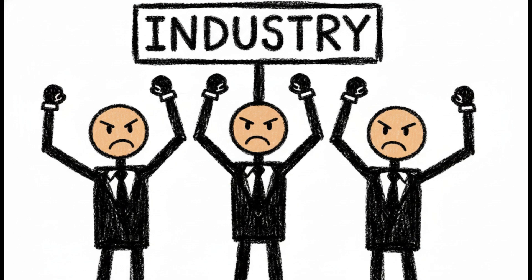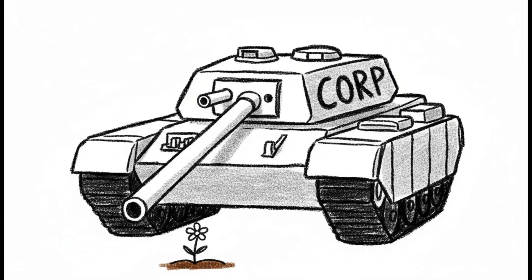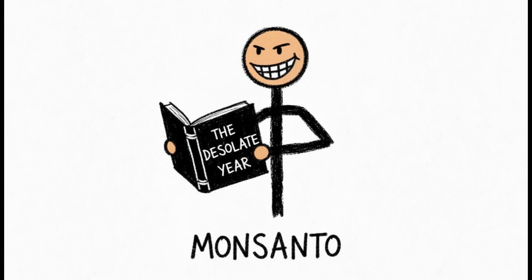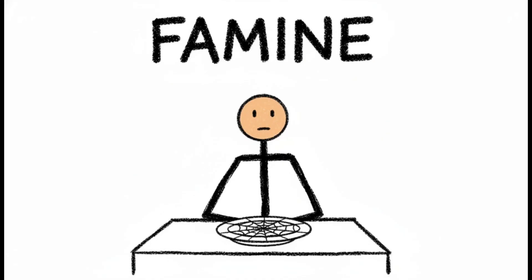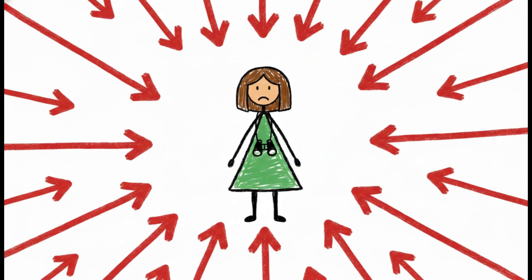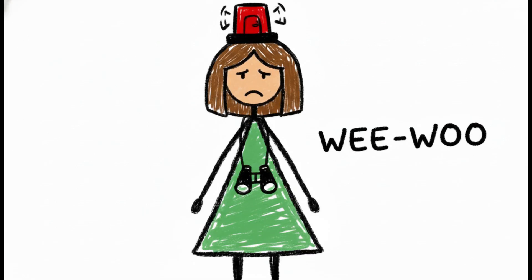Hence the title. The reaction from the chemical industry, notably Monsanto and Velsickel Chemical, was swift, ruthless, and brutal. They launched an all-out war. Velsickel threatened her publisher with legal action, while Monsanto published a dark parody called The Desolate Year, claiming that banning pesticides would lead to famine and disease. Critics didn't debate her science; they attacked her personally, dismissing her as a hysterical woman and an alarmist.